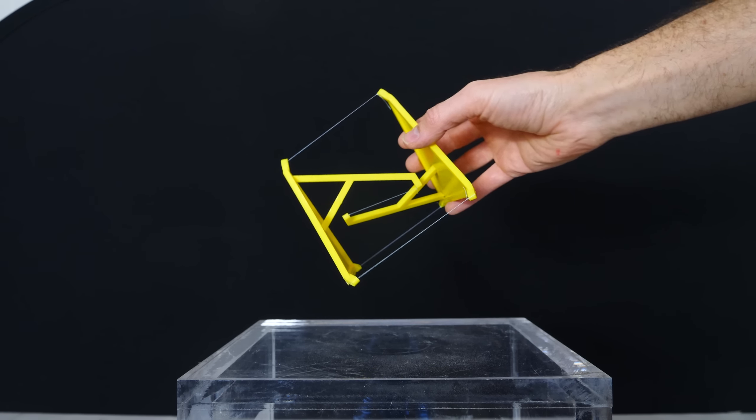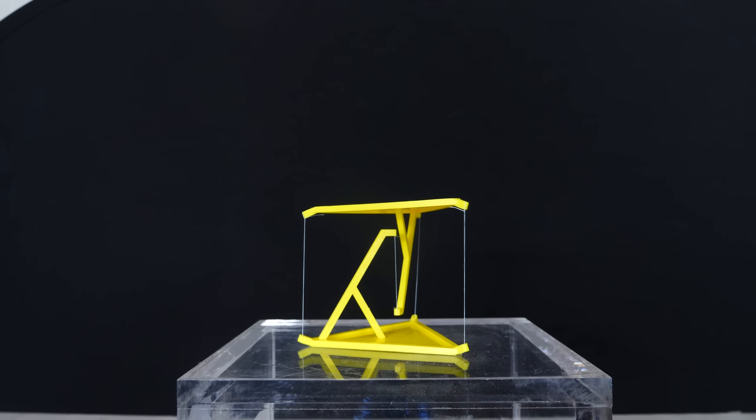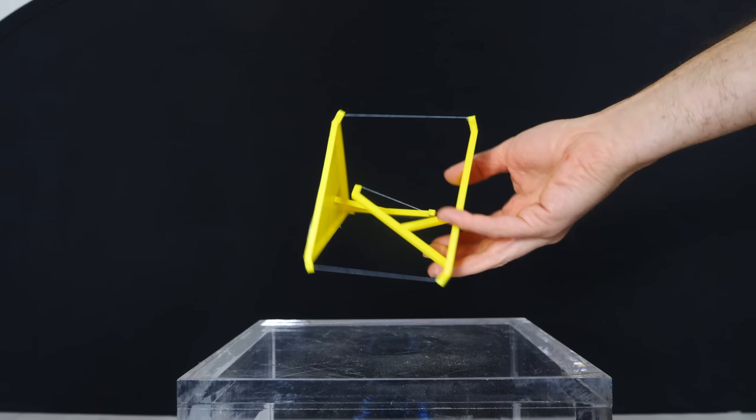What's cool about tensegrity structures is if you viewed it from the outside as a black box, you wouldn't actually know it was only under tension in the threads. It would seem like its own component where you could push on it and it was kind of squishy, but you wouldn't know it was actually just supported by threads.